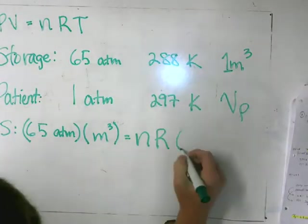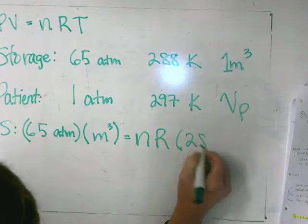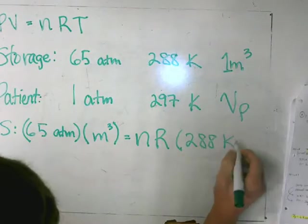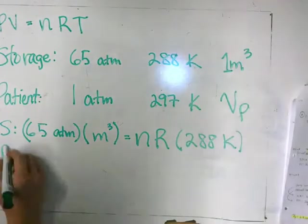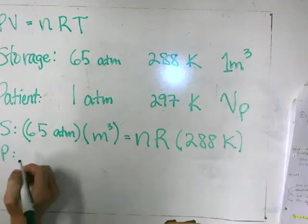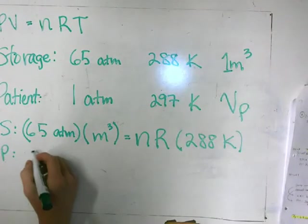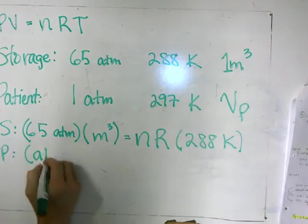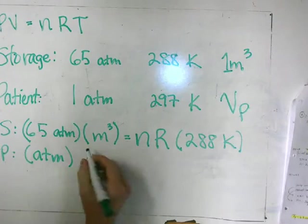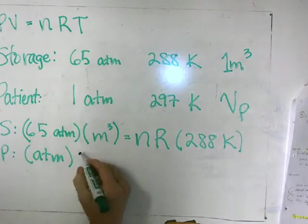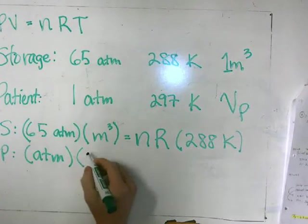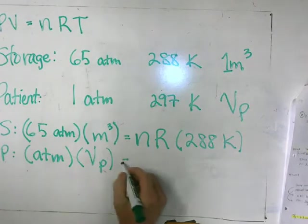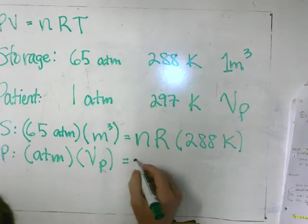For the patient, the pressure is one ATM. The volume is unknown — we don't know the volume. And that's also equal to N, the number of moles, times the ideal gas constant R, times the temperature, 297 Kelvin.